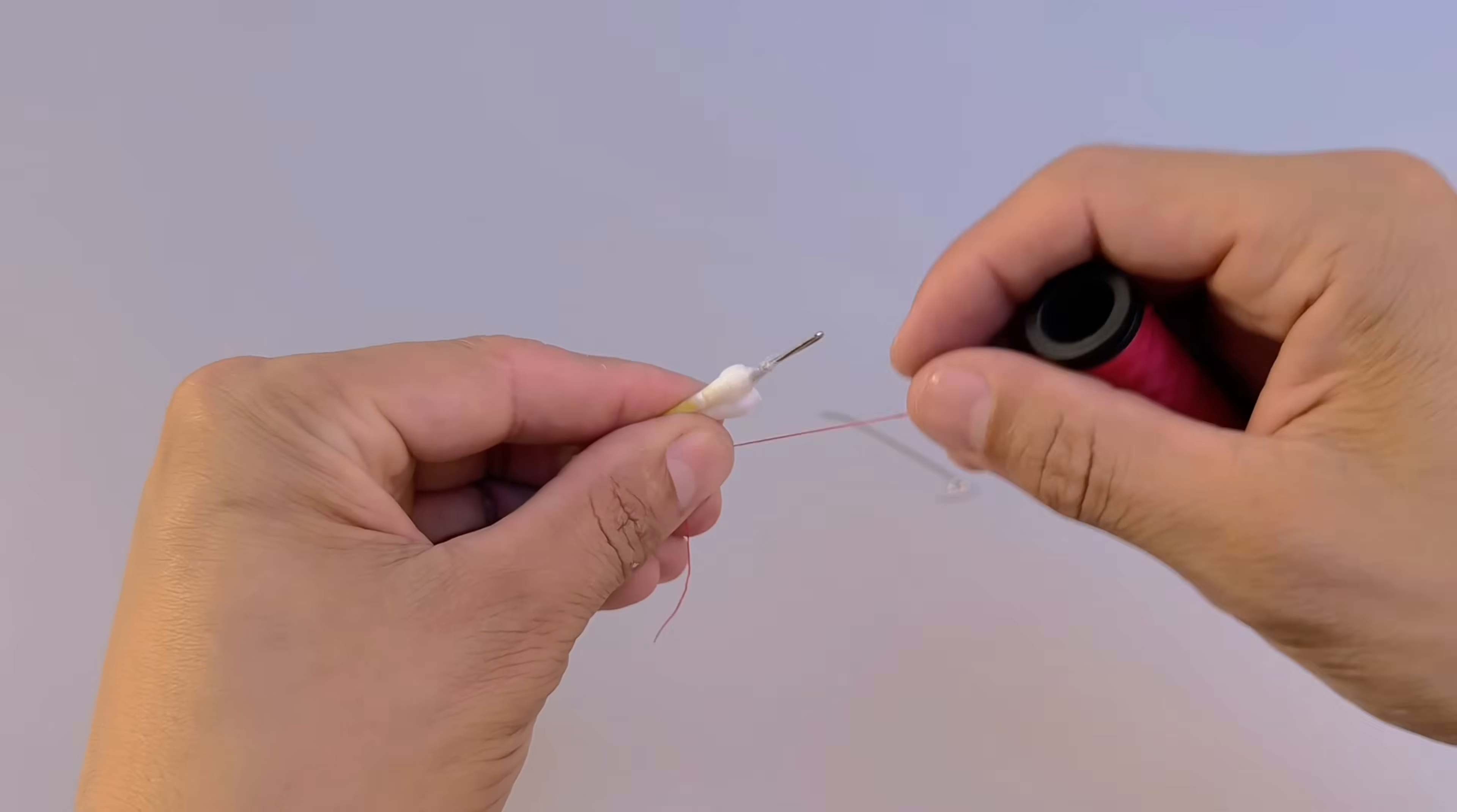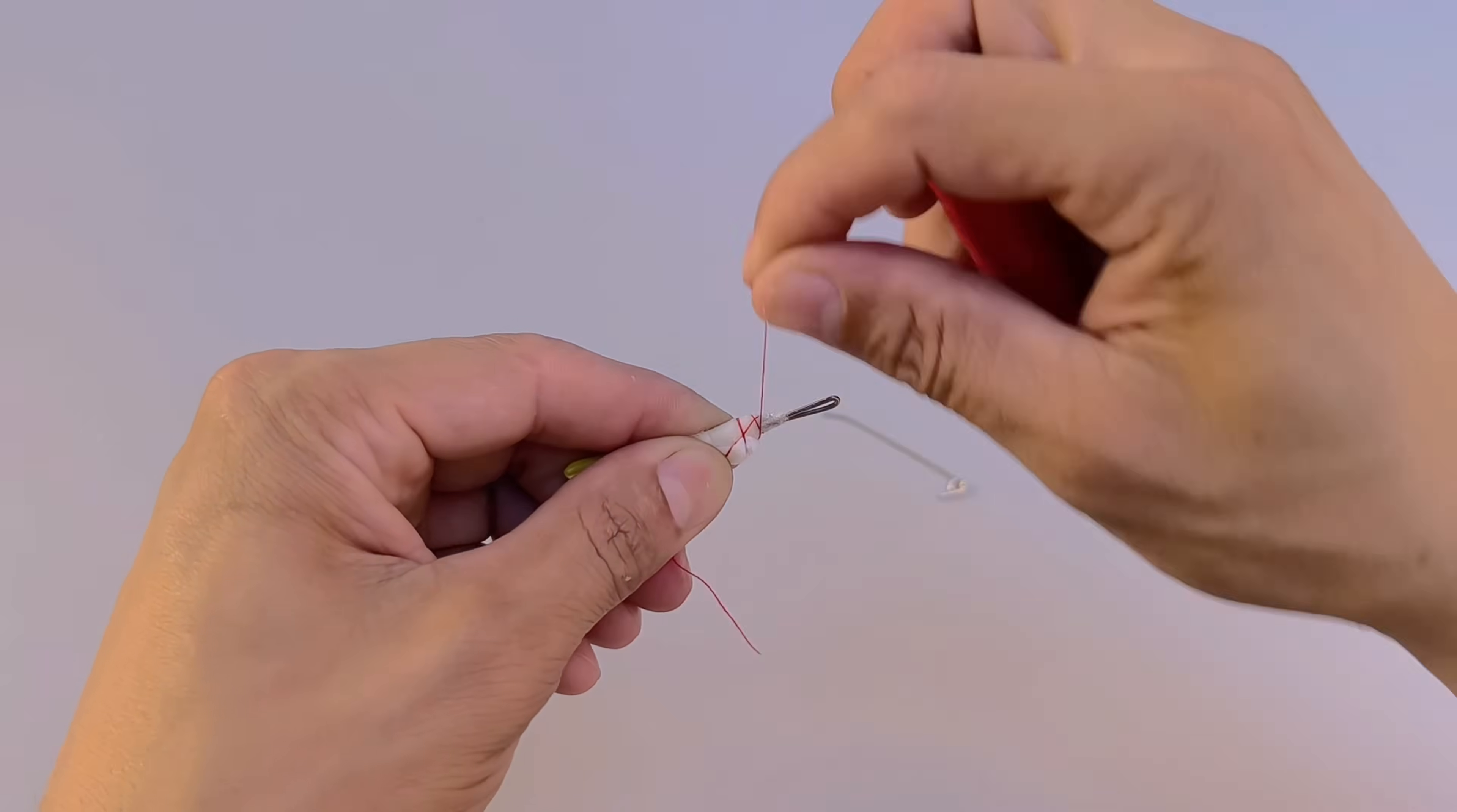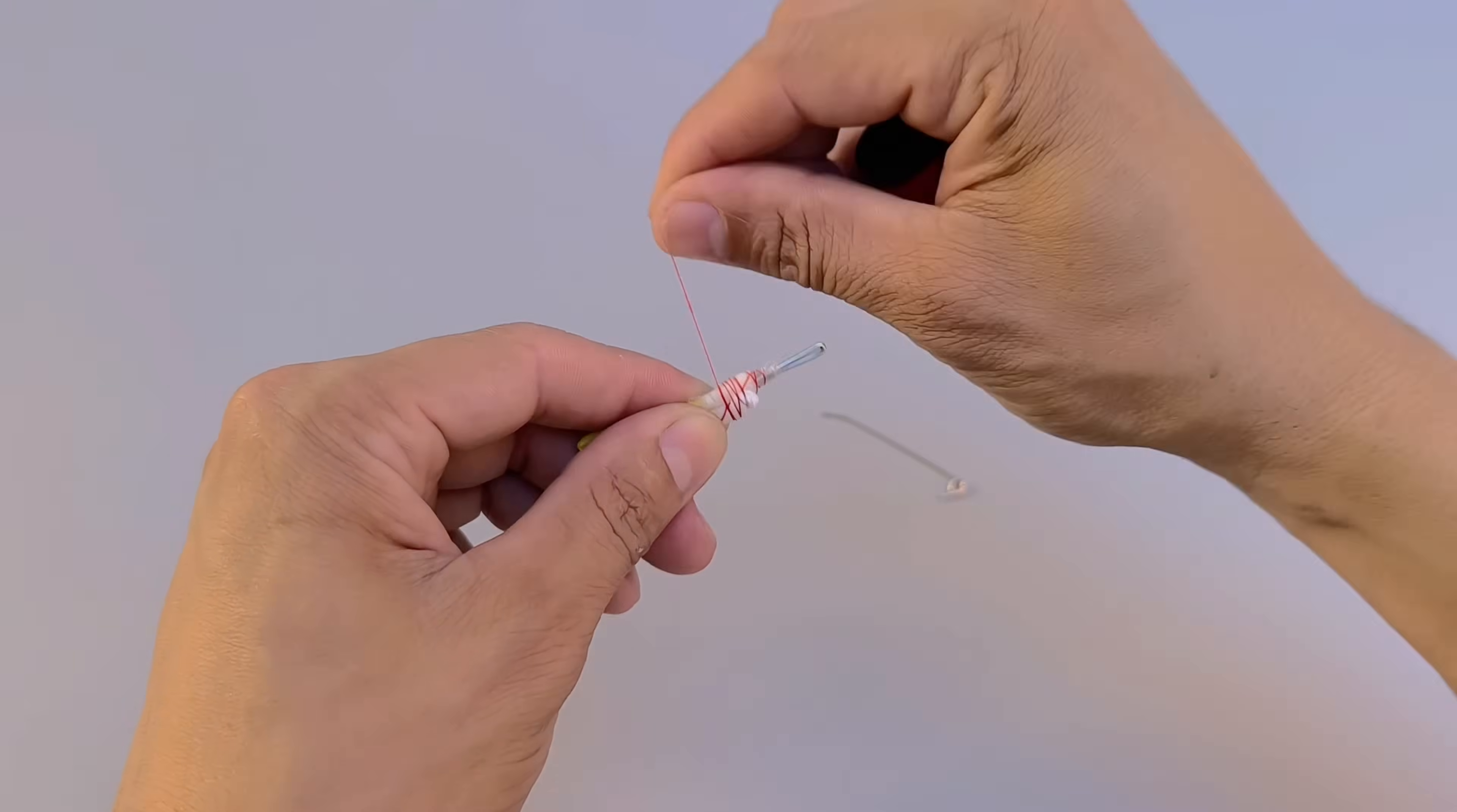Then, wrap some sewing thread around it to secure it even more and reinforce it with an extra layer of super glue. The result is a small, rigid, sturdy instrument, almost like a mini wire that is resistant to the touch.